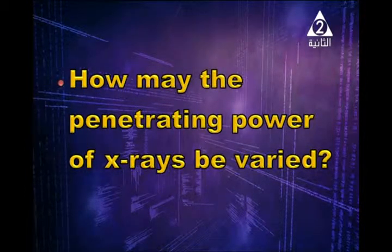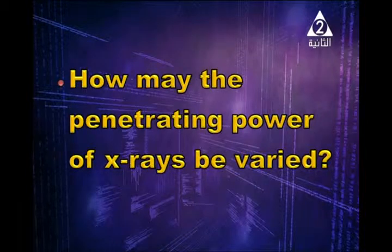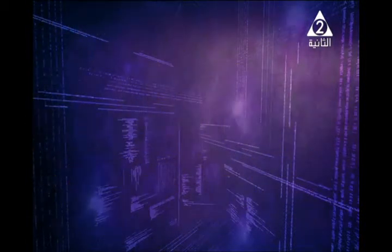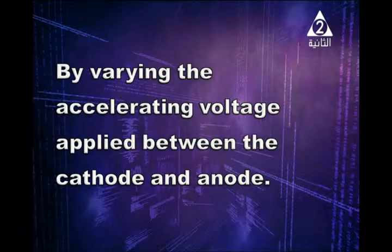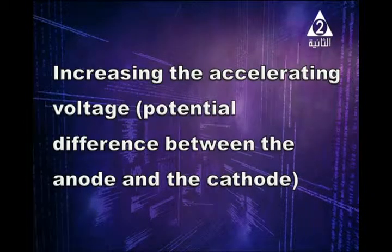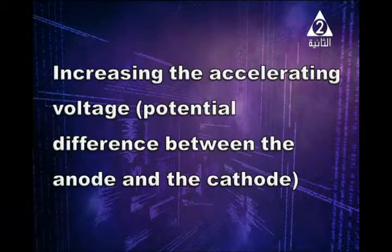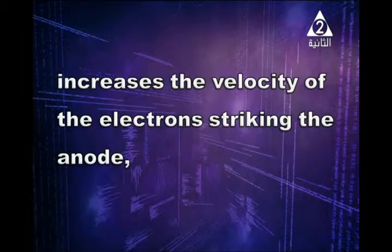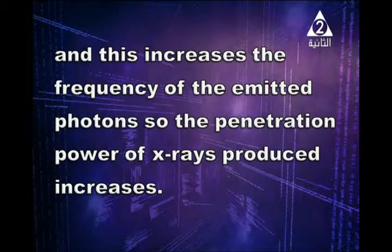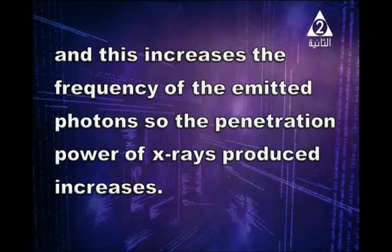How may the penetrating power of X-rays be varied? By varying the accelerating voltage applied between the cathode and the anode. For example, increasing the accelerating voltage increases the velocity of the bombarding electrons striking the anode, which increases the frequency of the emitted X-ray photons. So the penetration power of the X-rays produced increases.